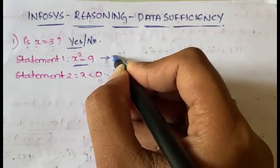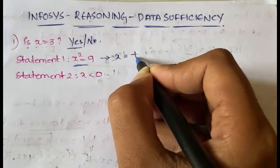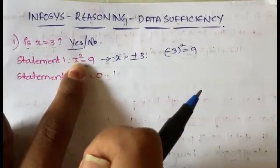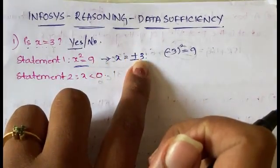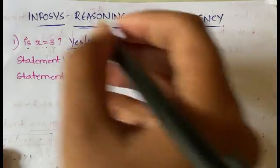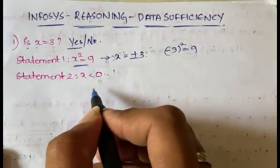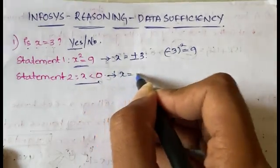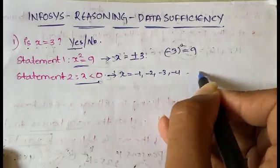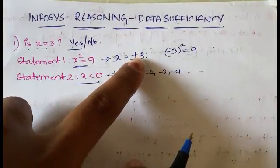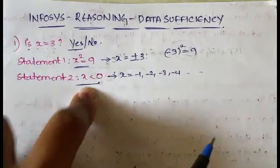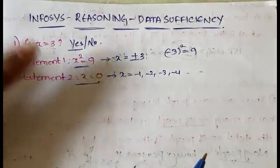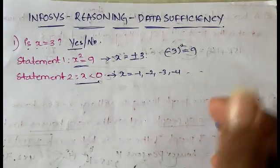So when x² = 9, you get x = +3 and x = −3. You're not sure whether x equals 3 or not. Statement two says x < 0, meaning x can be −1, −2, −3, −4, anything. Using statement one alone you get ±3; using statement two alone you get a range of negatives. With either statement alone you cannot determine the answer.